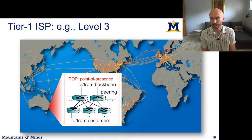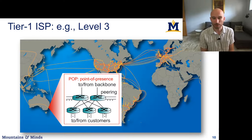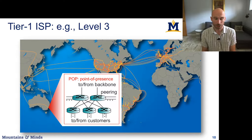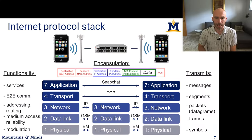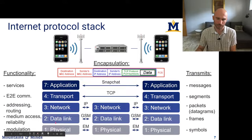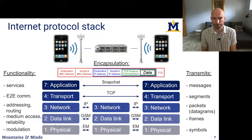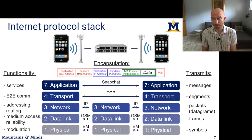That's the high-level overview of how the internet is built. From now on we'll start looking at the protocols, starting at the application layer and slowly working our way down through transport, network, data link, and physical. Let me know if there are any questions, otherwise I'll see you guys on Friday.